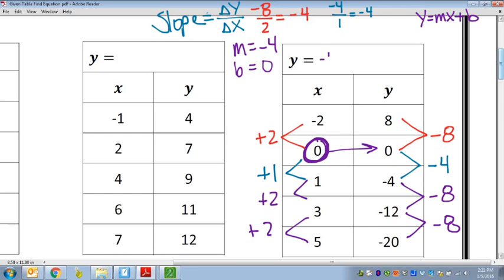So in this problem, my equation would be y equals negative 4x plus 0. But we don't have to write the plus 0 if we don't want to, but that's how that works. So that's how we find the slope and the y-intercept given a table.